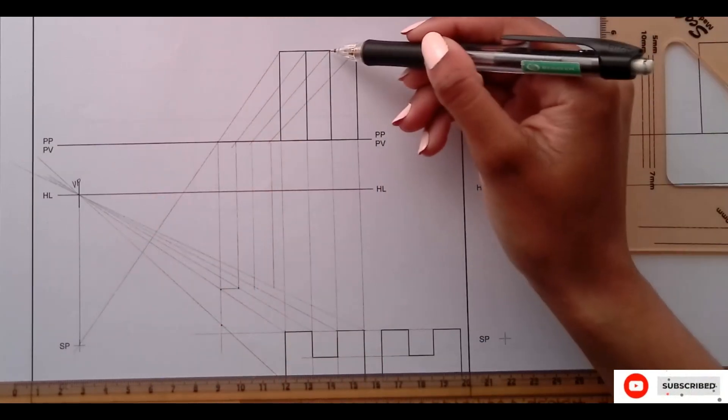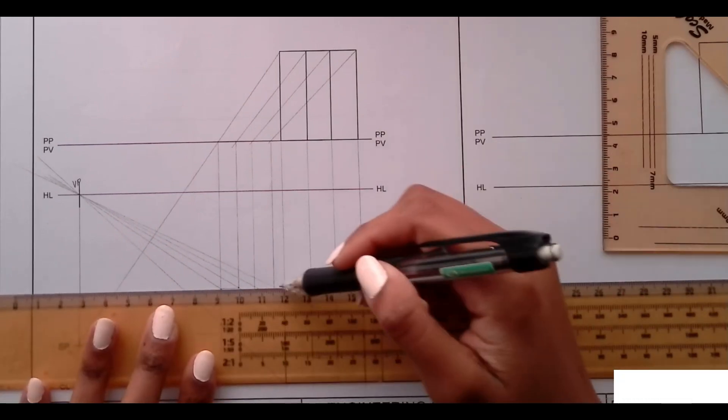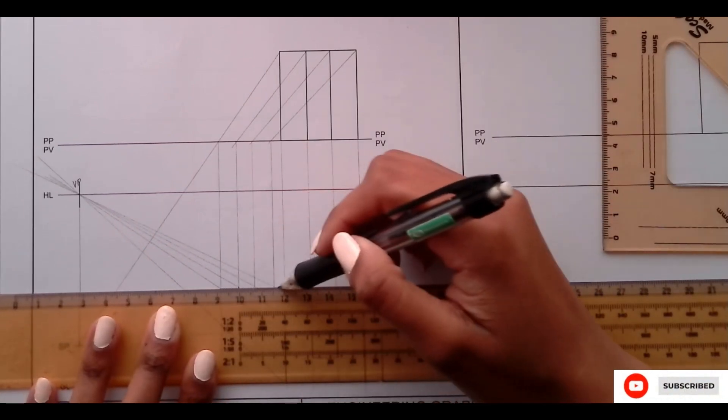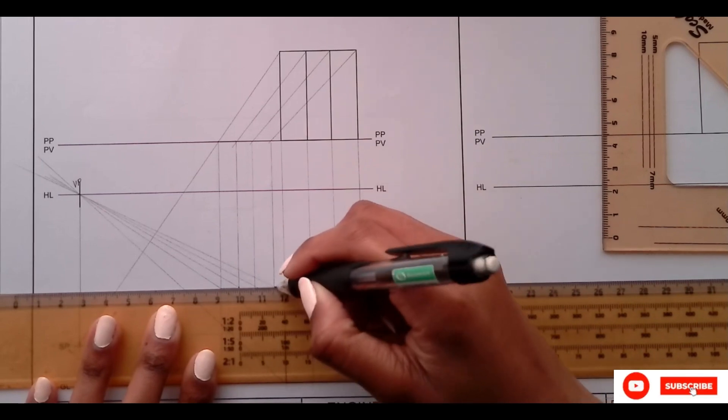And just like they are joined there at the back, you also join them as well. They should be in line.